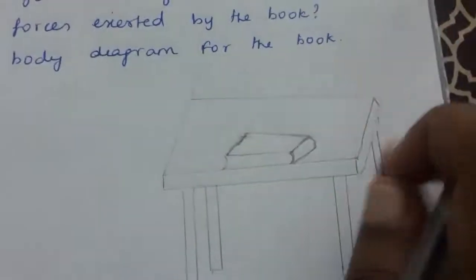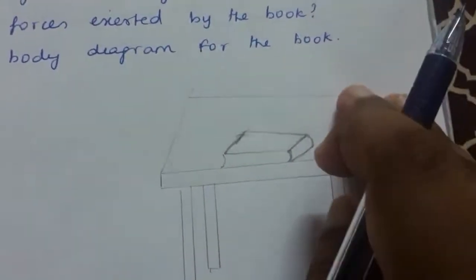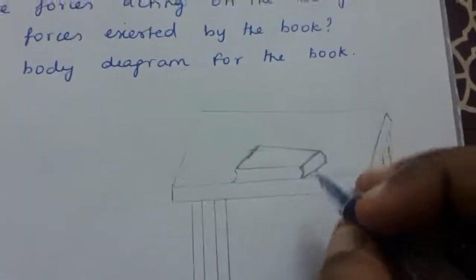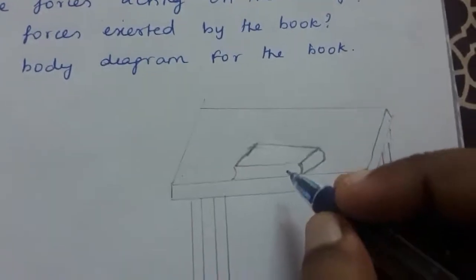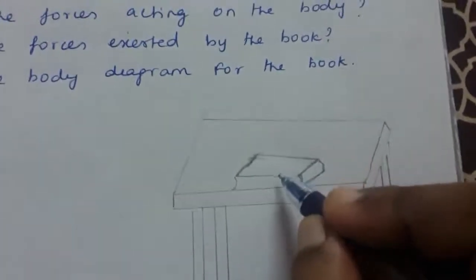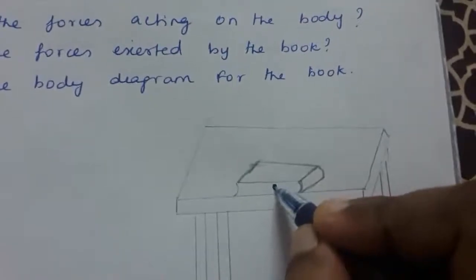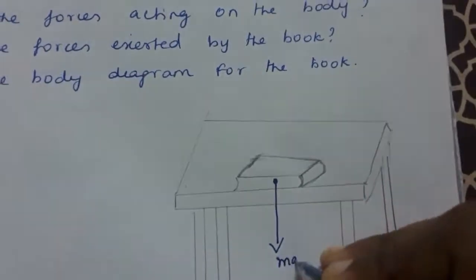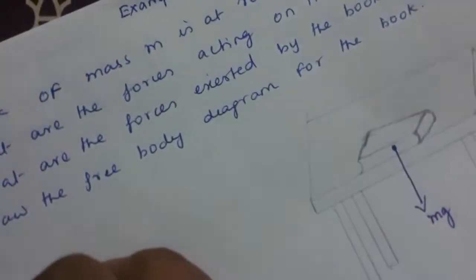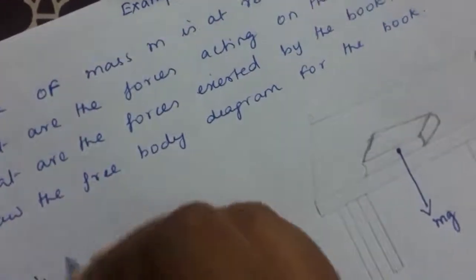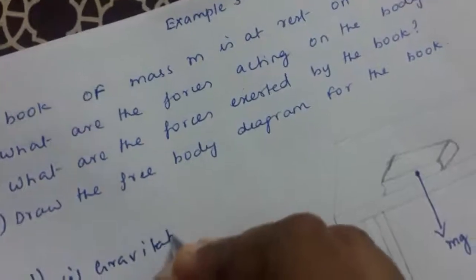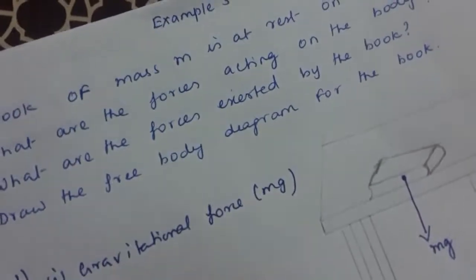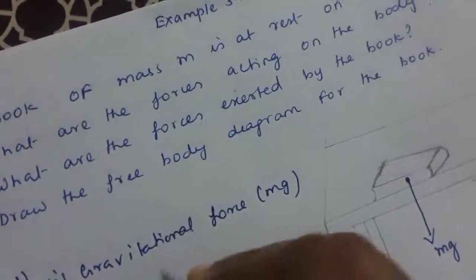Here is the book, placed on the table. There are two forces acting on the book. The first one is the gravitational force, which acts in the downward direction. So the first force acting here is the gravitational force, that is Mg acting downwards.